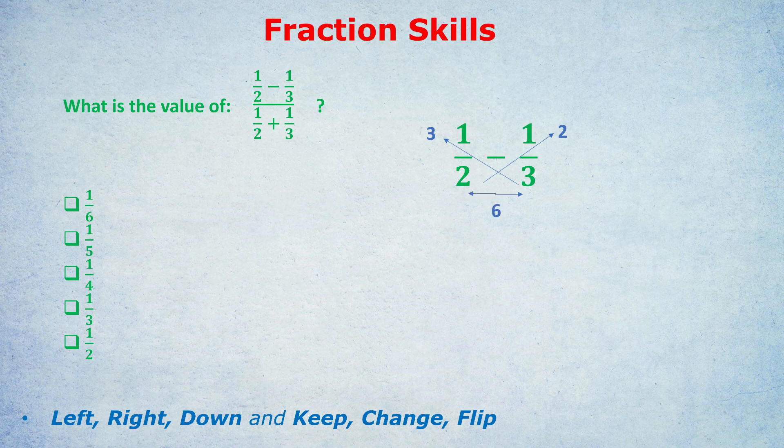Now what do we do with those two numbers at the top? Well, because we're subtracting the fractions, we're going to do 3 take away 2. You see how the two results were 3 and 2 at the top? There's a subtract sign between the two fractions. So we do 3 take away 2, which is of course 1. So the answer is 1 over 6.